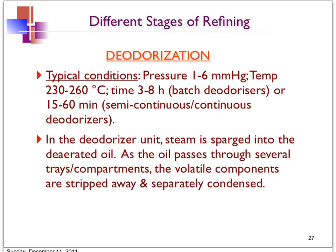In the deodorizer unit, steam is sparged into the de-aerated oil. The oil is de-aerated to remove the air, which reduces oxidation especially at the high temperature in the deodorizer. The steam comes into intimate contact with the oil, and as the oil passes through several trays or compartments in the deodorizer, the volatile components are stripped away by the steam and then separately condensed and collected as the fatty acid distillate.